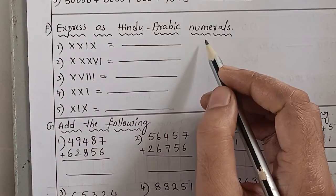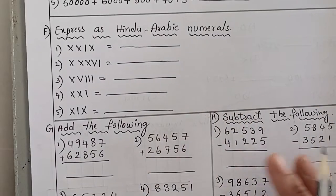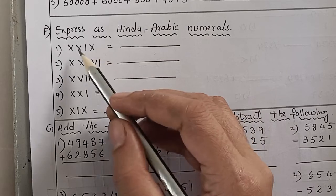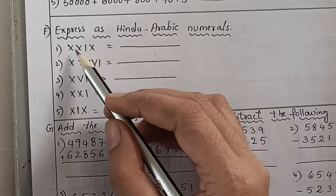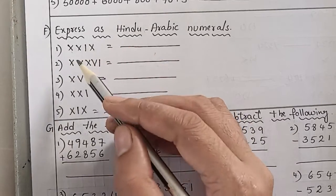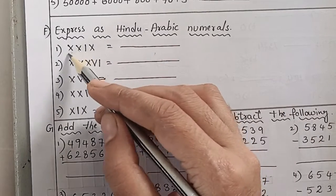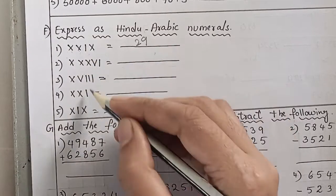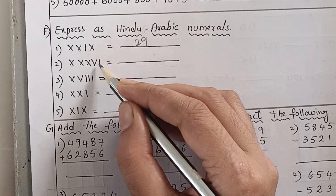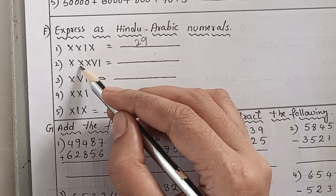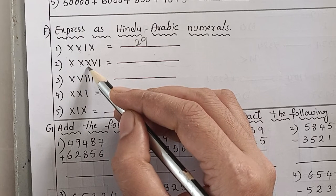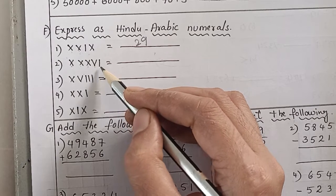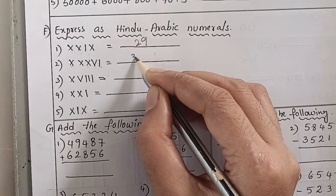Next bit: expressed as Hindu-Arabic numerals. Here we write Roman numbers. So we write twenty-nine. XXXVI — X means ten, ten is twenty, twenty plus ten is thirty, V means five, thirty plus five is thirty-five, I means one, thirty-five plus one is thirty-six.